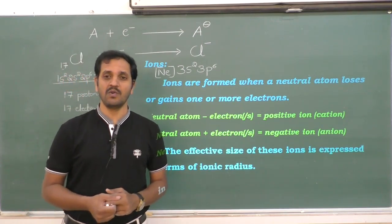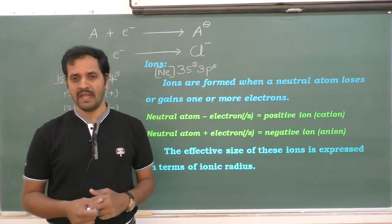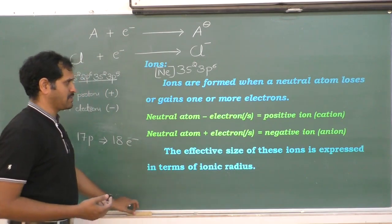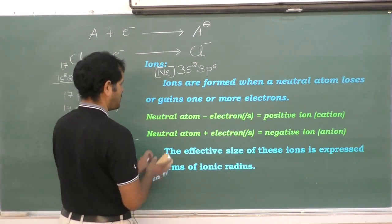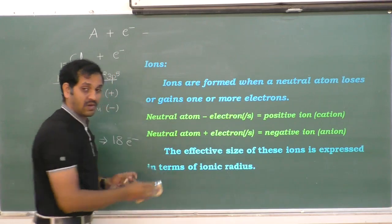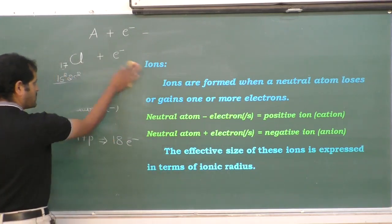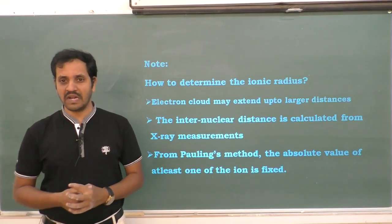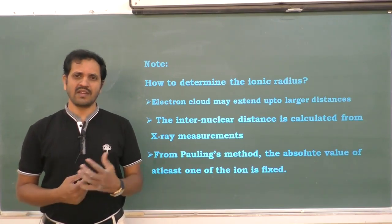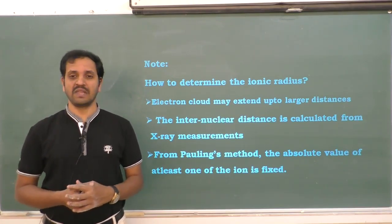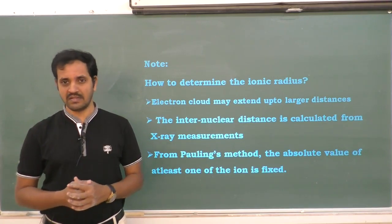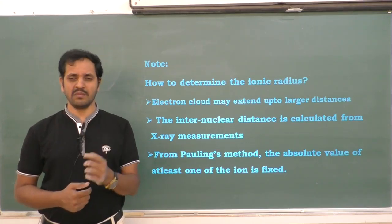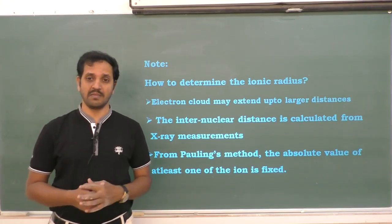Now comes a question: how to determine the ionic radius? There are various methods available. According to our syllabus, one feasible method will be used. The most widely used technique is Pauling's method.